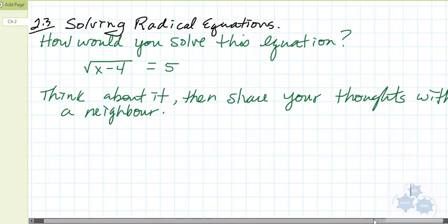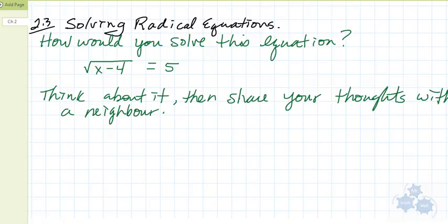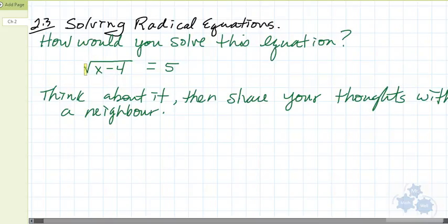Alright, Pre-Calculus 30, Section 2.3. I put this question up on the board a few minutes ago, and in class you've had a couple minutes to think about this. The question says: how would you solve this equation? The equation I've given you is the square root of x minus 4 equals 5.